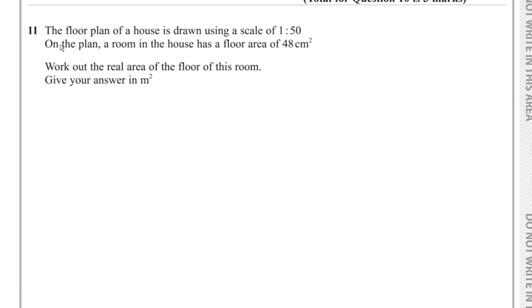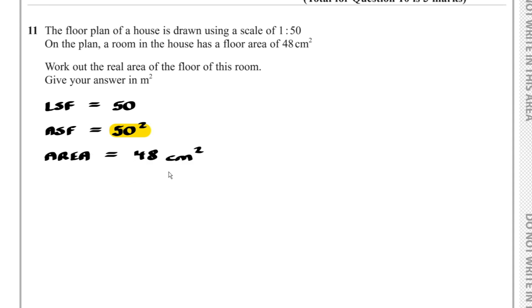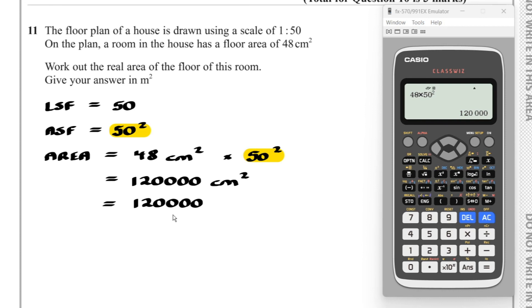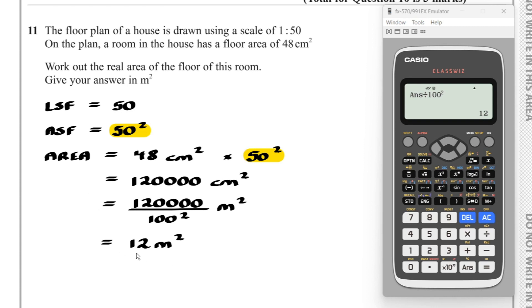Question 11: A floor plan uses a scale of 1 to 50. A room has a floor area of 48 cm² on the plan. The length scale factor is 50, so the area scale factor is 50² = 2500. Real area = 48 × 2500 = 120,000 cm². Converting to m²: 120,000 ÷ 100² = 12 m².